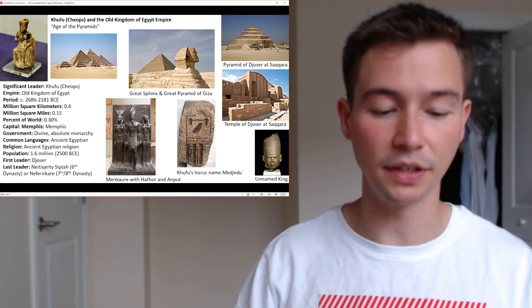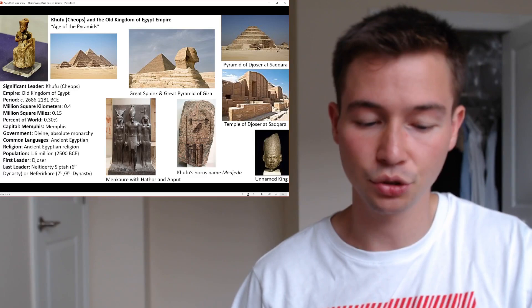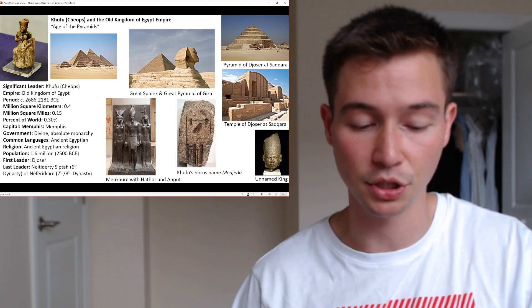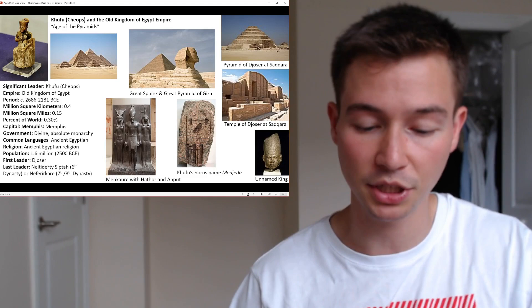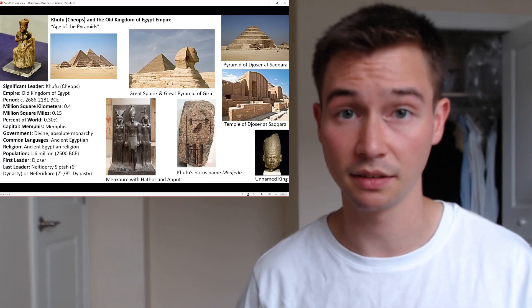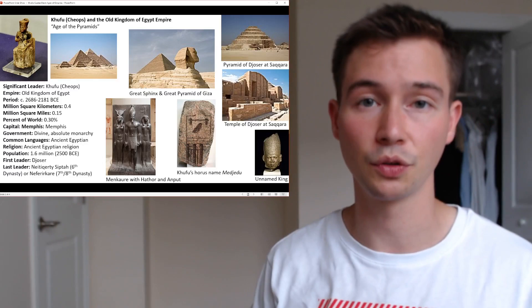In brief conclusion: the Old Kingdom of Egypt remains an enduring testament to the grandeur and sophistication of ancient Egyptian civilization. From awe-inspiring pyramids to intricate administrative systems, this period laid the foundation for much of what defines Egyptian culture. While it eventually succumbed to environmental challenges and internal fragmentation, its legacy continued to shape Egyptian history for millennia. Egypt did not disappear — Egypt is still a country today — but the Old Kingdom empire declined, and as we'll see, there was a new greatest empire in Lagash.